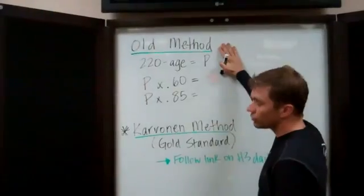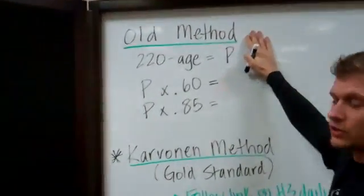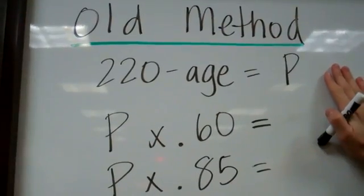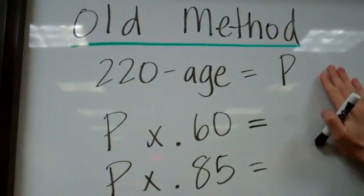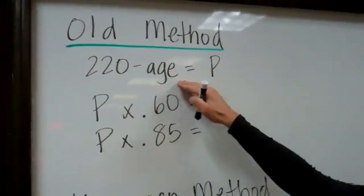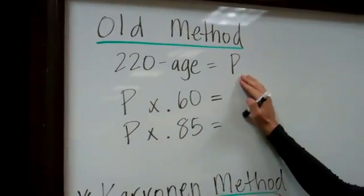The first method, it's a little older. It takes into account only your age. It's a very simple equation. You could pause the video now if you need to stop and calculate this for yourself. It's 220 minus your age. That gives you what's called your predicted maximum heart rate.